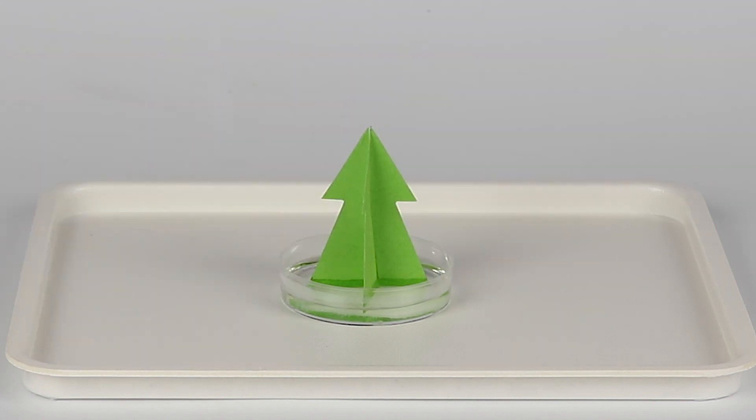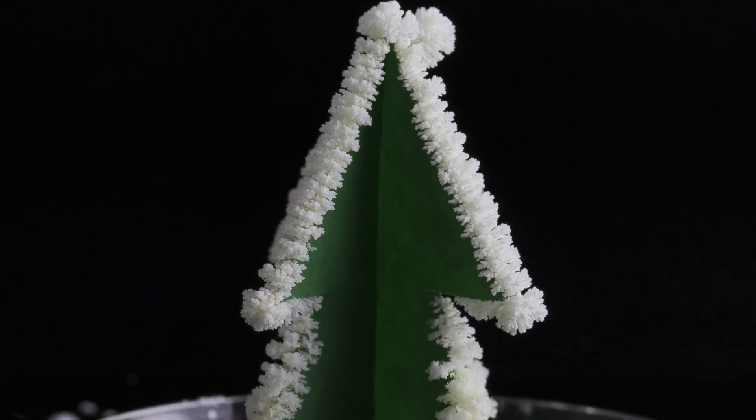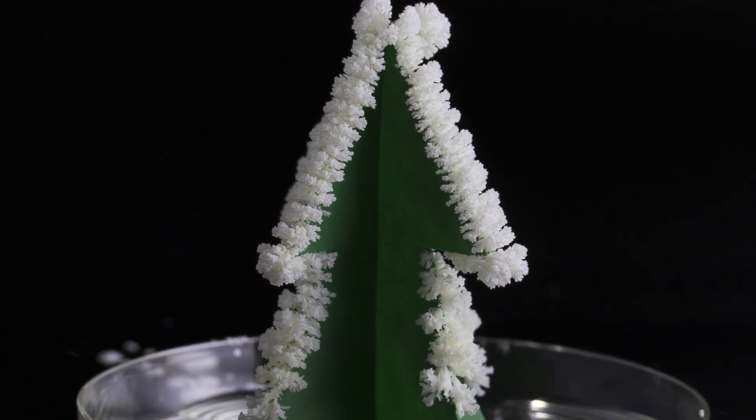Due to the capillary effect, the solution will spread all the way through the paper Christmas tree and gradually cool down. The solubility of the sodium chloride will decrease and as a result, the sodium chloride will precipitate in the form of beautiful snow-like crystals covering the tree.